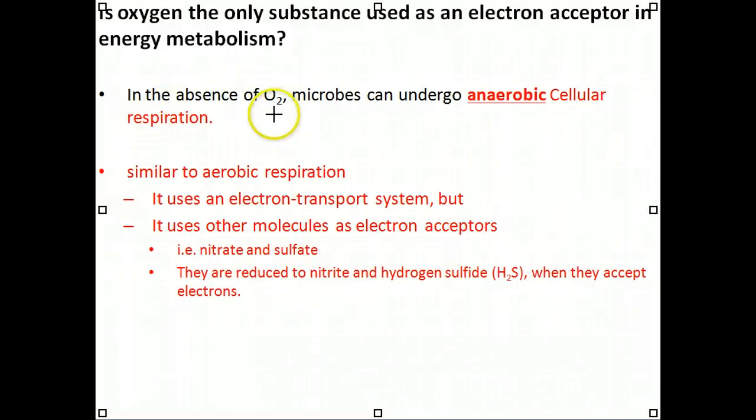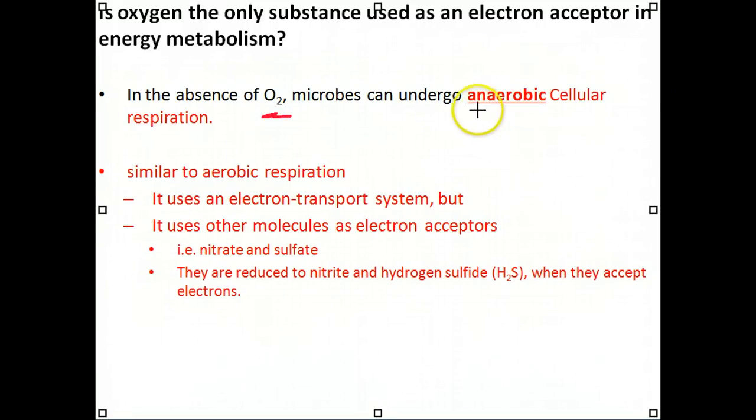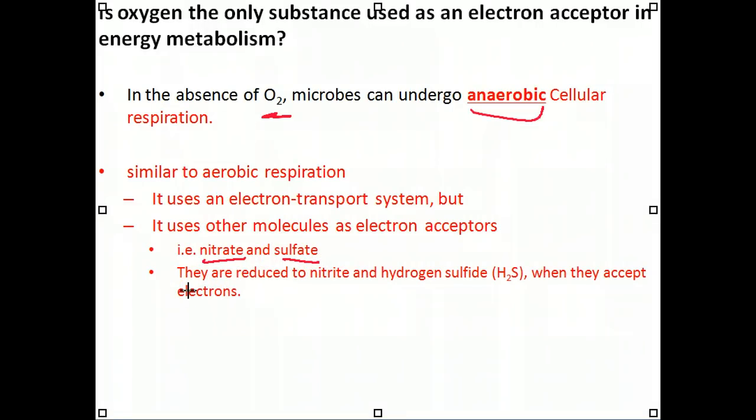In the absence of O2, microbes can undergo anaerobic cellular respiration by substituting oxygen molecules with other substrates, such as nitrates and sulfates. If we go back to the electron transport chain where the final electron acceptor is oxygen, we simply substitute them with nitrates and sulfates.